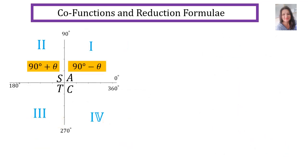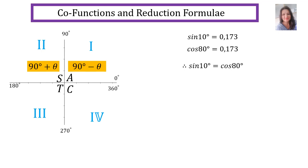Co-functions and reduction formula. Let me explain co-functions first. Sin 10° equals 0.173, and cos 80° also equals 0.173. So sin 10° equals cos 80°. When two angles add up to 90 degrees and one is sin and the other is cos, they are co-functions. Back to the reduction formula: in the first quadrant we have 90 minus theta, and in the second quadrant it's 90 plus theta.